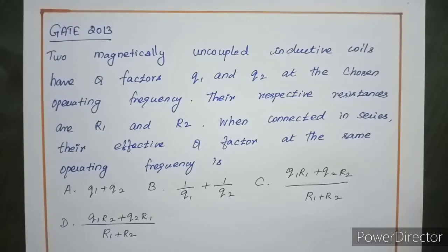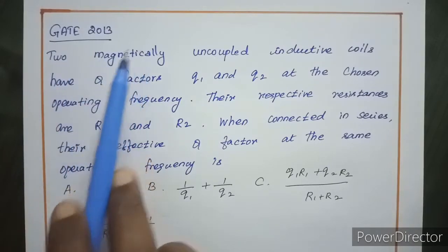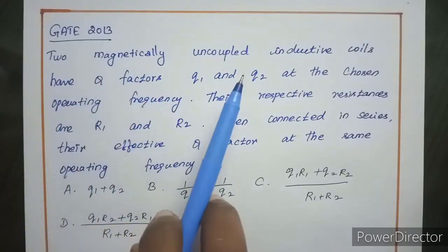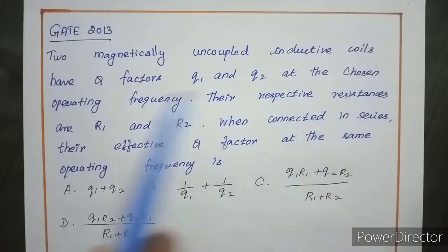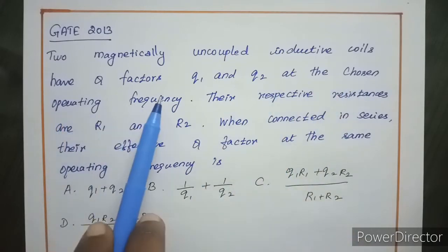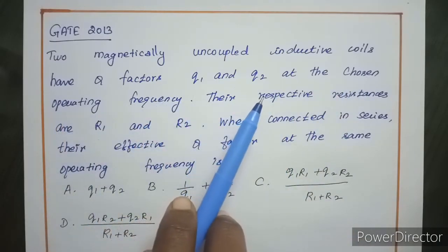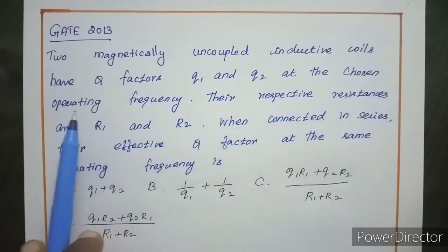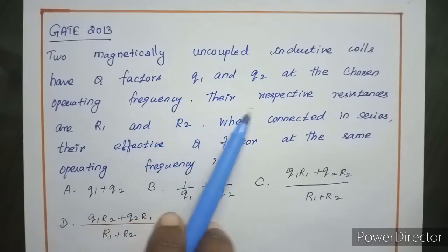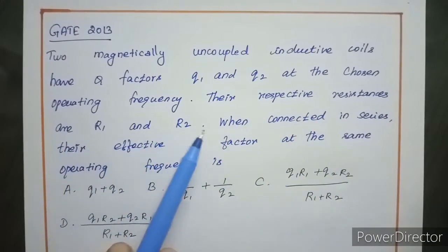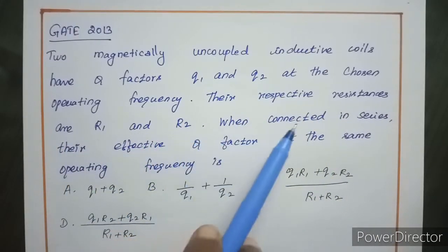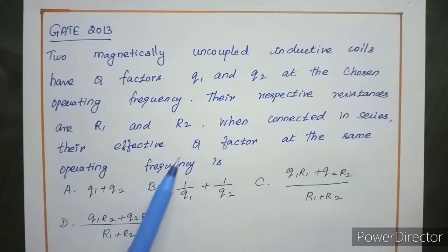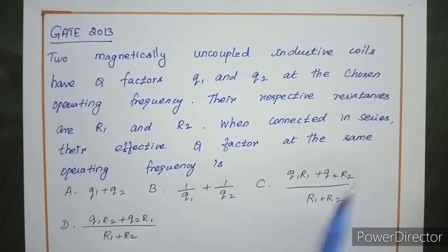Hi students, I am going to get a Gate problem solved. Gate 2013: two magnetically uncoupled inductive coils have Q factors Q1 and Q2 at the chosen operating frequency. Their respective resistances are R1 and R2. When connected in series, their effective Q factor at the same operating frequency is?